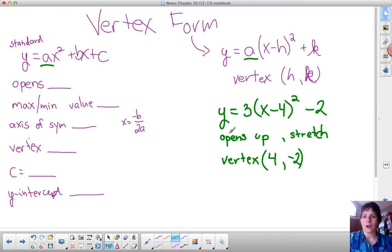So we have our direction of opening, we have our vertex. Well, if it opens up, doesn't that mean that we have a minimum? And if we have a minimum, what's that minimum value? What's the lowest possible output? Same as what we had before. It's the y part of the vertex, so in this case that value is negative 2.